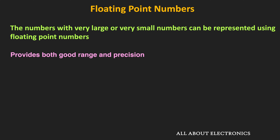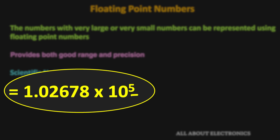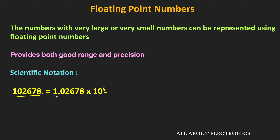Let us see how to represent floating point numbers. The representation of floating point numbers is very similar to how we represent decimal numbers in scientific notation. In scientific notation, the radix point or decimal point is set such that we have only one significant digit before the decimal point. For integers, by default, the radix point is set to the right-hand side of the least significant digit. To represent a number in scientific notation, the decimal point is shifted to the left by 5 decimal places, and that is why the exponent is equal to 5. We have only one significant digit before the decimal point.